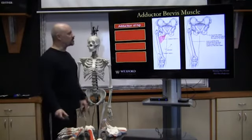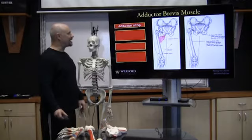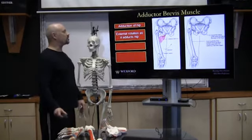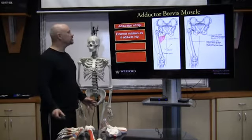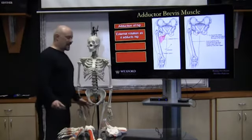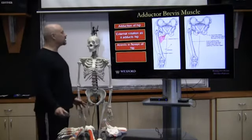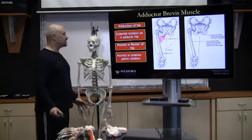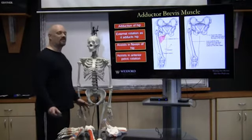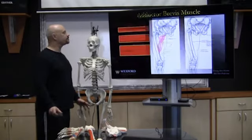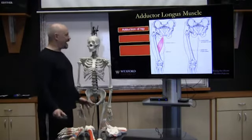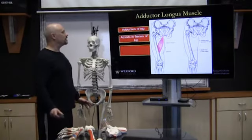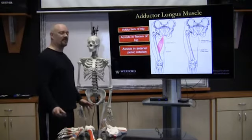The adductor brevis does adduction of the hip, external rotation as it adducts, assists hip flexion, and assists anterior pelvic rotation. The adductor longus does adduction of the hip, assists flexion of the hip, and assists anterior pelvic rotation.